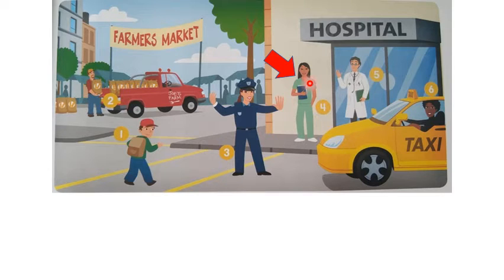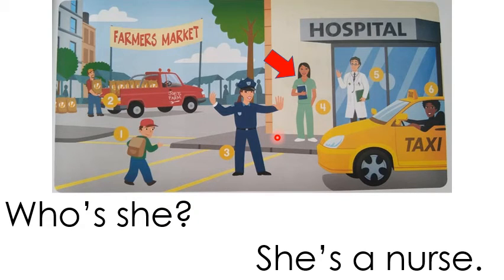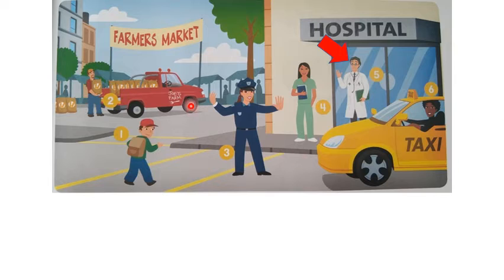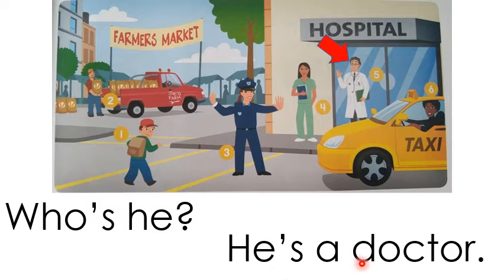Are we going to say 'who's she' or 'who's he'? Who's she. Good. Who's she? She's a nurse. She's a nurse. Who's he or who's she? Who's he. Good. He's a doctor.